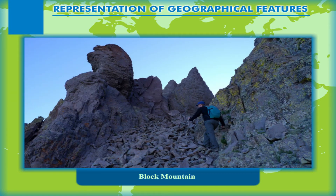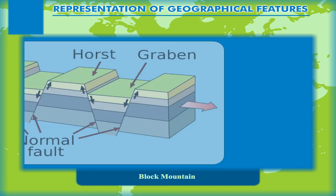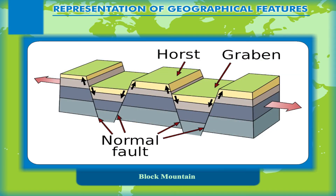Block Mountain: Fault block mountains or block mountains are created when faults or cracks in the earth's crust force materials or blocks of rock upwards or downwards. The uplifted blocks are block mountains or horsts. The intervening dropped blocks are called grabens, which can be small or form rift valley systems.